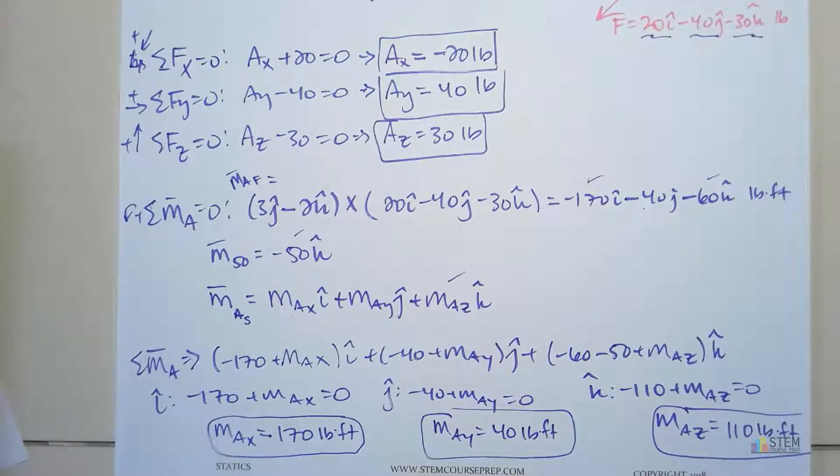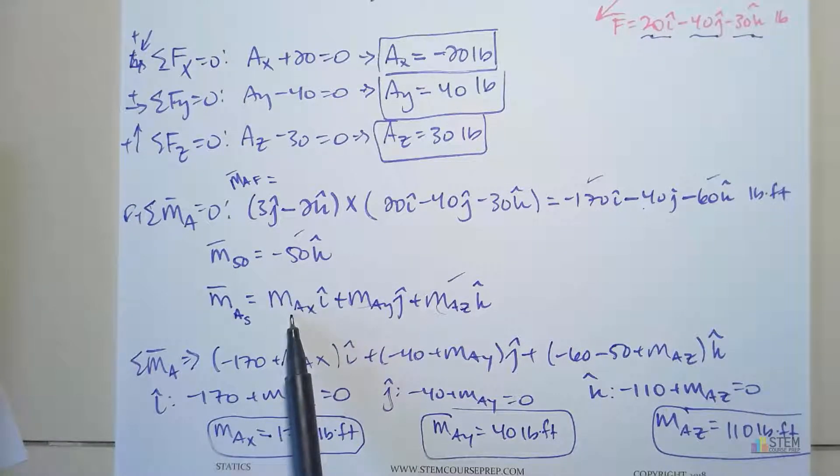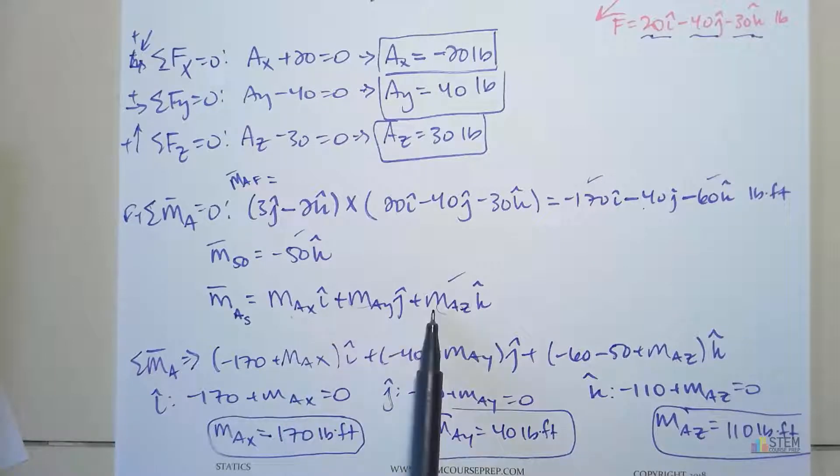So that's how you go about looking at a fixed support. You got to remember to add these couple moments in that are produced by the support. This is the main error that students make when they get down to the moments they leave these things out. They have to be included because you have to solve for them. So make sure you include those in your equations and then hopefully everything will work out great. All right. I'll see y'all next time.